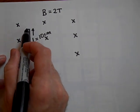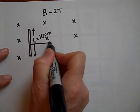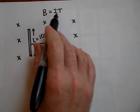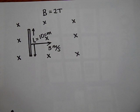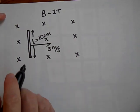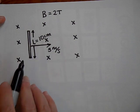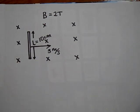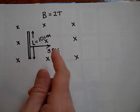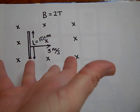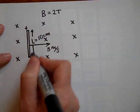Here's a bar that we're going to move this way at a speed of 3 meters per second in a magnetic field of 2 Teslas. The bar has a length of 10 centimeters. Which end of this bar is going to be positive and which end will be negative? If you have a bar moving this way and the field is into the page, the positive charges are going to get pushed up. So this end is going to be positive and this end will be negative.